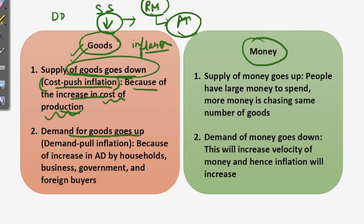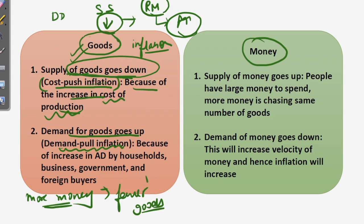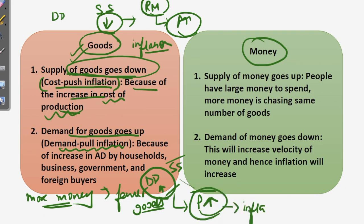The next factor is demand for goods goes up, also known as demand-pull inflation. Suppose you have more money, so more money is chasing fewer goods in the economy. As a result demand goes up but supply is constant, so prices will also go up. When you demand more of some good, producers think the product can be sold at a higher price, so prices and inflation both rise.